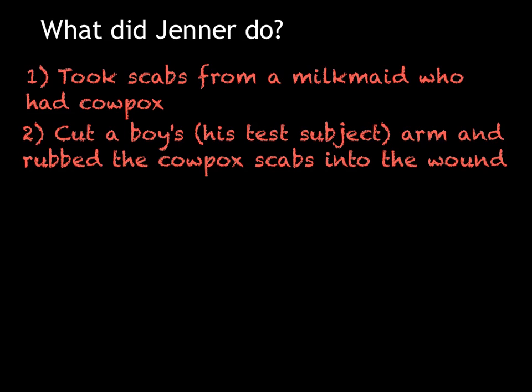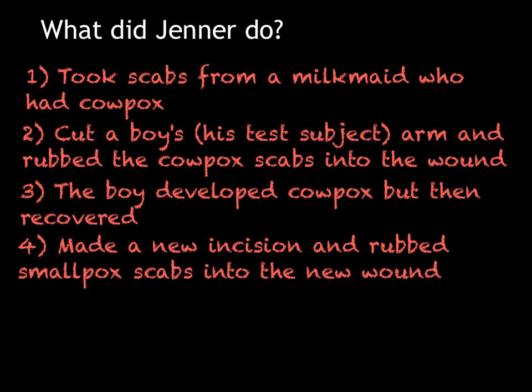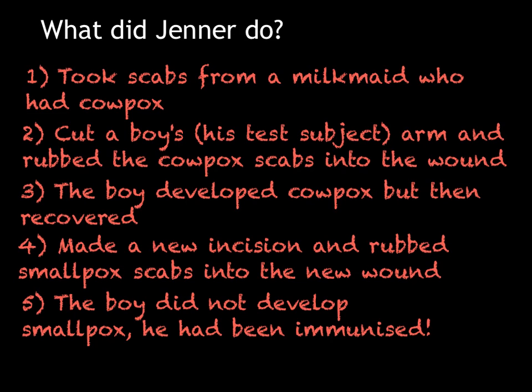The boy developed cowpox but, as it isn't particularly dangerous, he was unwell for a while and then recovered. Once recovered, Jenner made a second incision on the boy's arm and rubbed in bits of a scab from someone who had smallpox. However, the boy did not catch smallpox — Jenner's theory was correct. This was because the cowpox antigens triggered the boy's B lymphocytes to produce antibodies. Smallpox shares some of the same antigens as cowpox, so when the boy was infected with smallpox, his immune system quickly produced antibodies to stop him from getting the disease. He had been immunised.